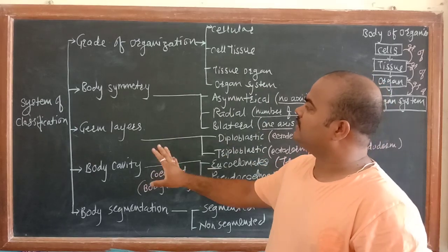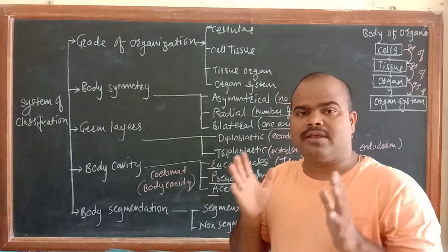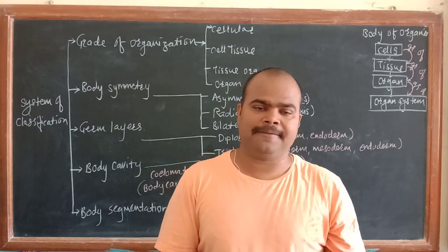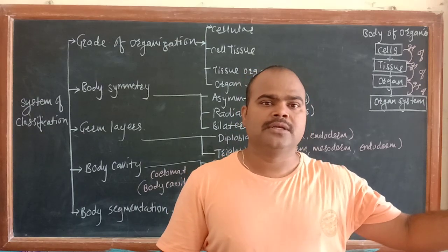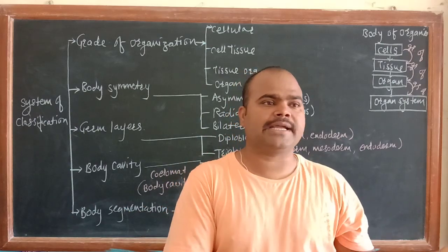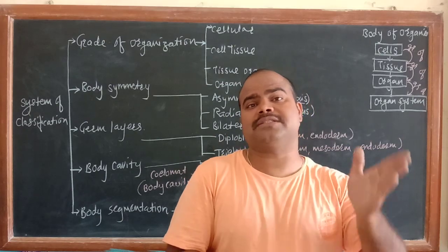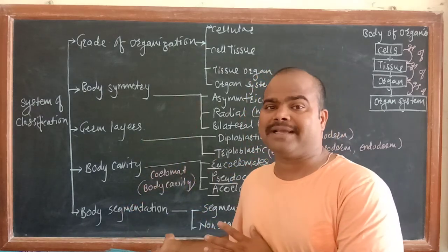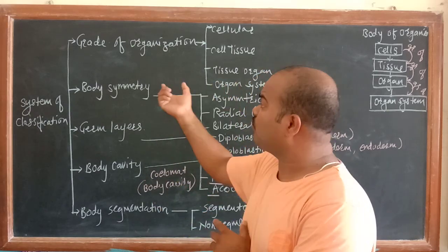The next point is the criteria of classification. When we want to segregate anything, we decide some criteria. If we classify students, we might segregate girls one side and boys one side, taller ones one side and shorter ones one side. In that way, we first decide the criteria, then how they will be classified. To classify animals, they describe five criteria.